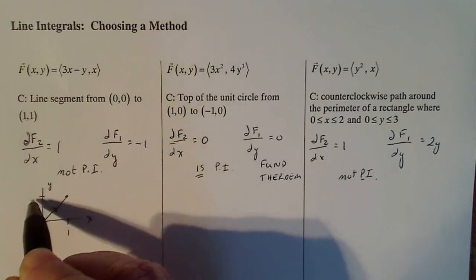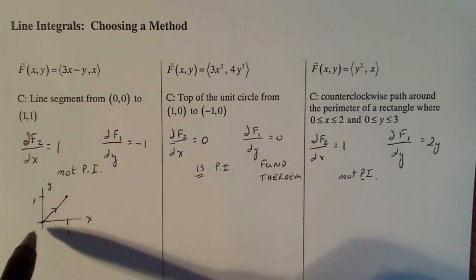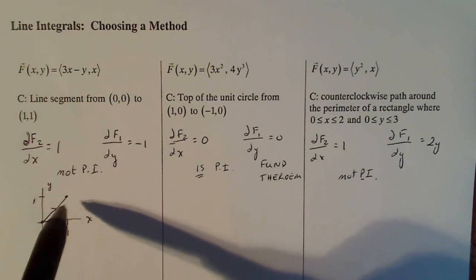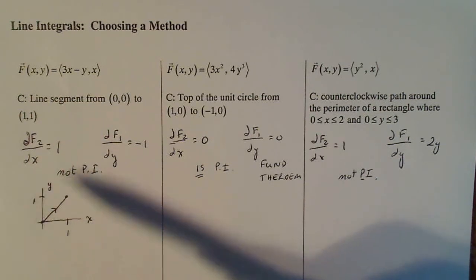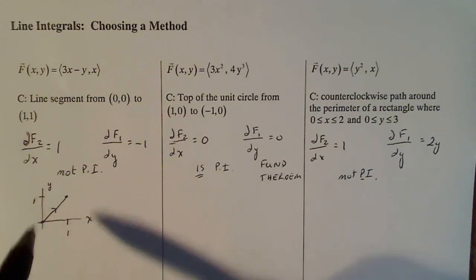Now Green's theorem says that the parameterized curve has to be simple, piecewise, smooth, closed curve. I believe that takes into account everything. And also, as you're moving along the path from one point to another, you have to be moving in such a way that the interior of the closed curve is to your left. Well, first of all, this isn't even closed, so I can't use Green's theorem.